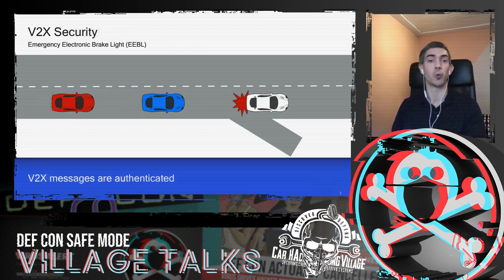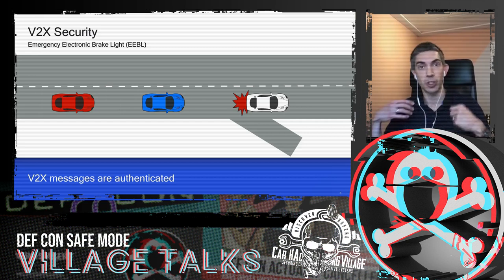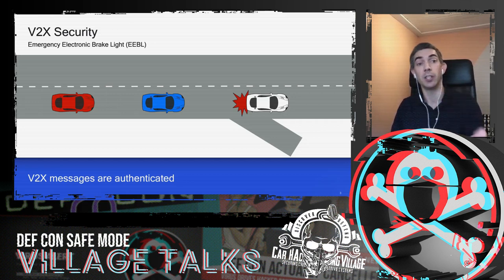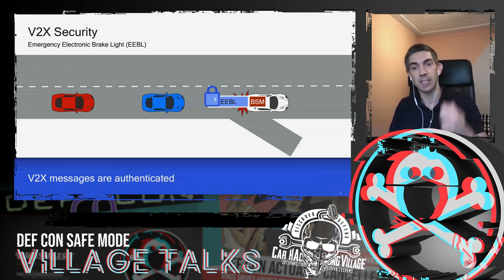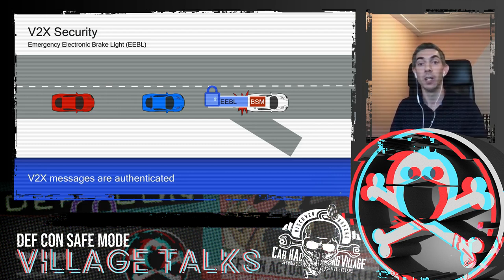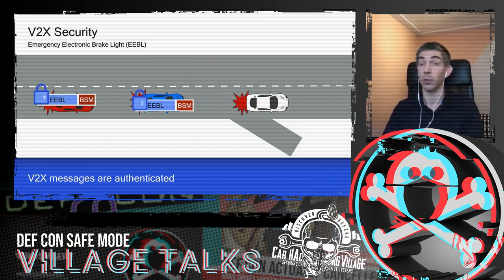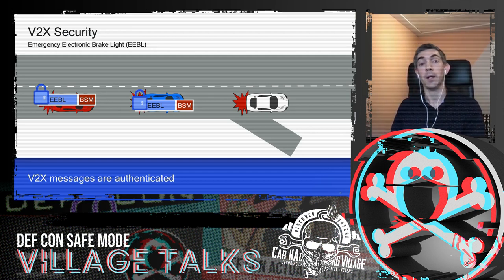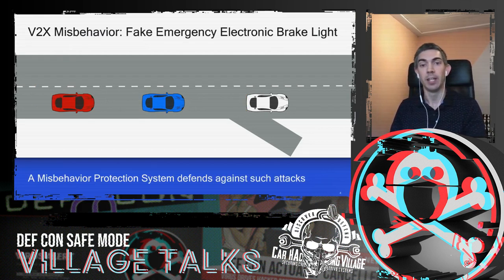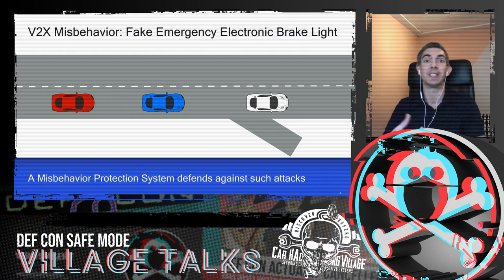From a security standpoint, we do not want external attackers to send bad messages to other vehicles. All messages that are sent are digitally signed. The white car signs with its private key, attaches a certificate to the message before sending it, and the receiver uses the keys to verify the message was sent by an authenticated vehicle.